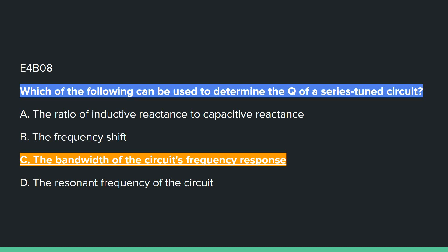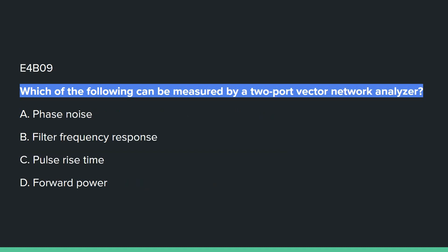E4B08: Which of the following can be used to determine the Q of a series-tuned circuit? Answer C: the bandwidth of the circuit's frequency response.